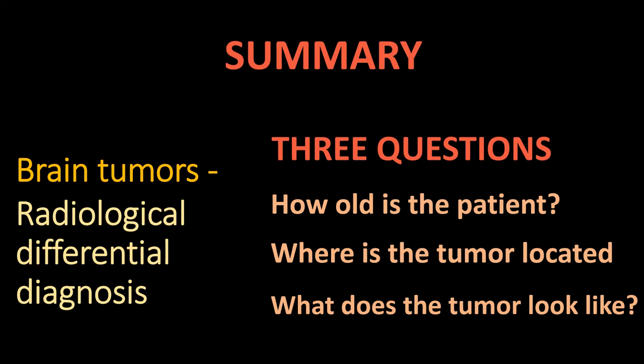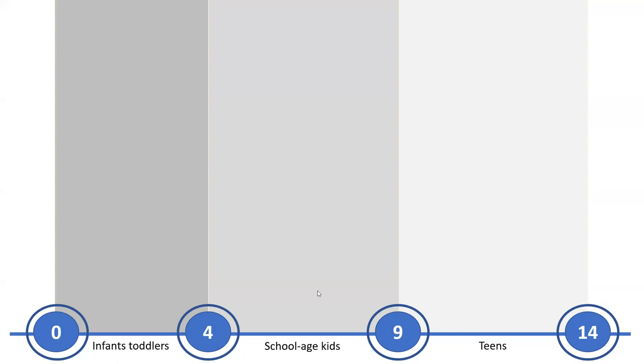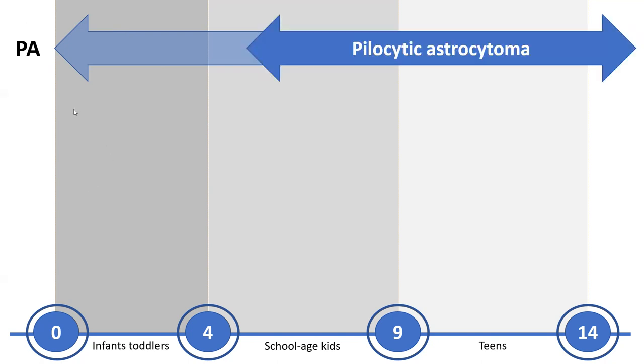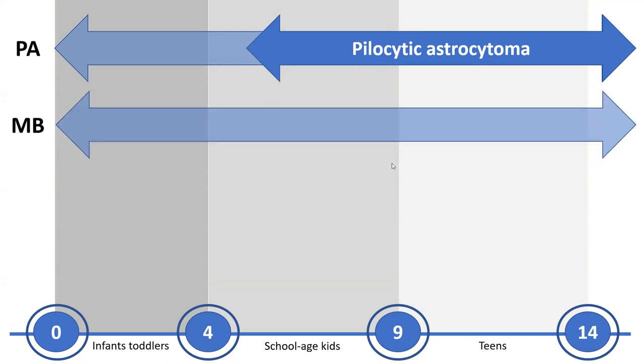That concludes my presentation on imaging of brain tumors in the posterior fossa in children. We started with three questions: how old is the patient? Where is the tumor located? And what does the tumor look like? Regarding age: pilocytic astrocytomas are mostly found in school-age children and young teenagers, peak incidence 5 to 15 years. Medulloblastomas are mostly found in toddlers and school-age children, mean age 6 years.